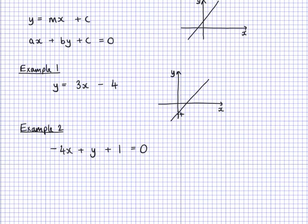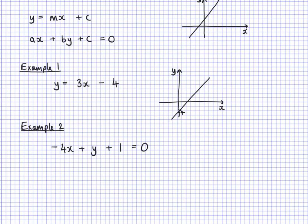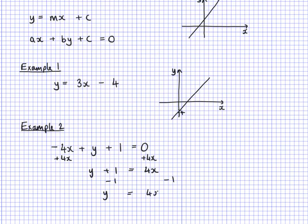Now looking at the next example, this one is more in the ax + by + c = 0 format. So a is negative 4, b is 1 because 1y is the same as y, and c is 1. This form doesn't tell me anything about the gradient or the y-intercept, so I need to rearrange it. I add 4x to both sides, leaving y + 1 = 4x. Then taking away 1 from both sides gives y = 4x − 1.